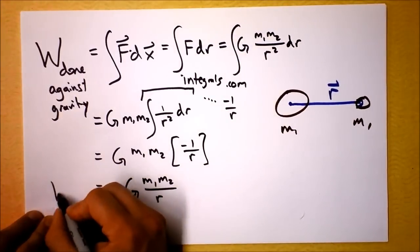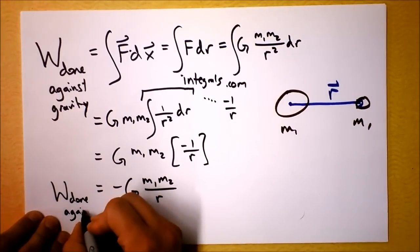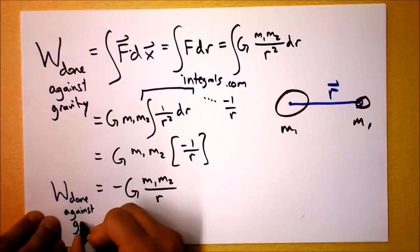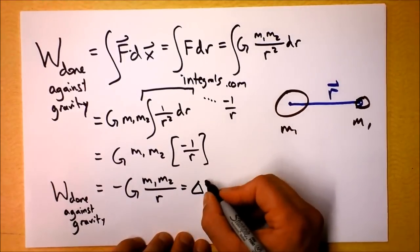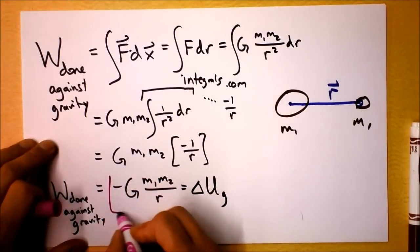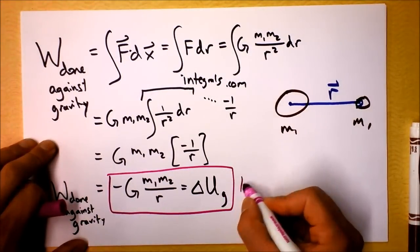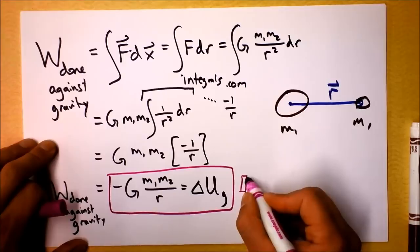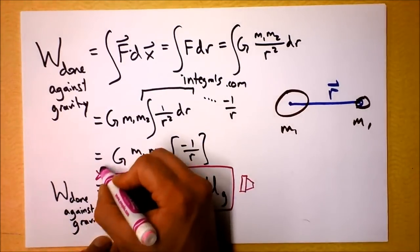So this work done against gravity is the change in gravitational potential energy. This gives us a very, very powerful equation. In fact, I'll give you a flower pot for that equation. That is such an important equation that you get a flower pot and a star.